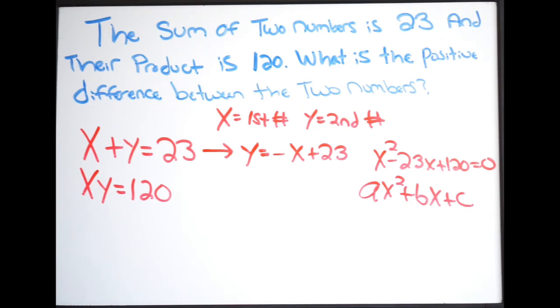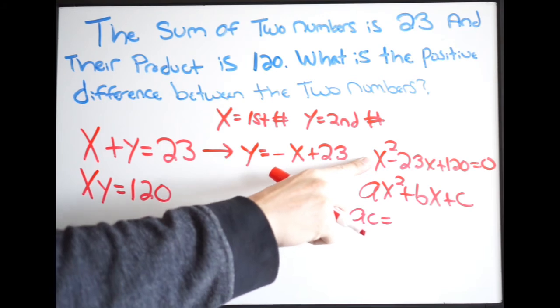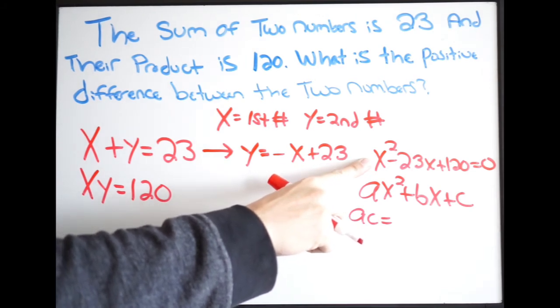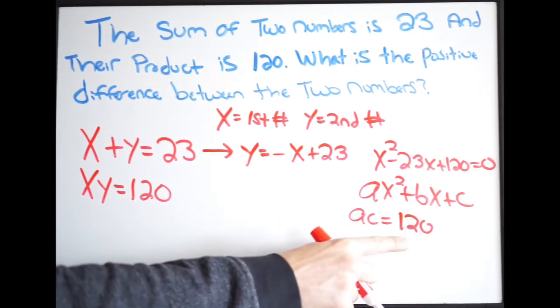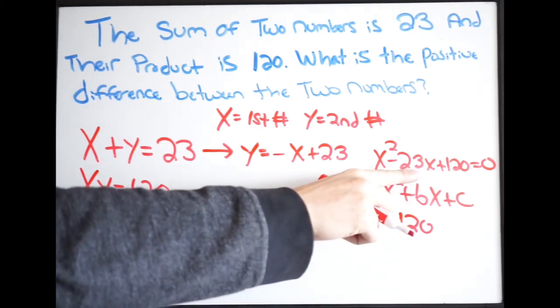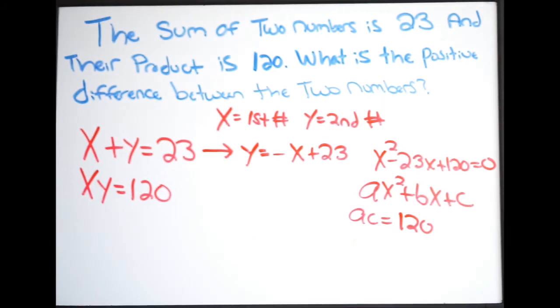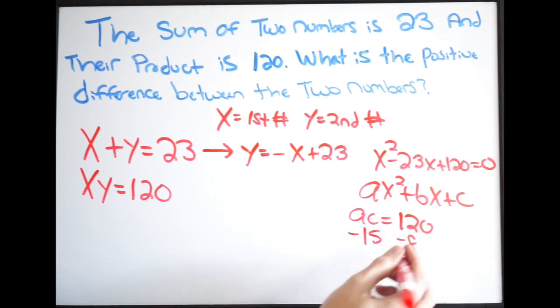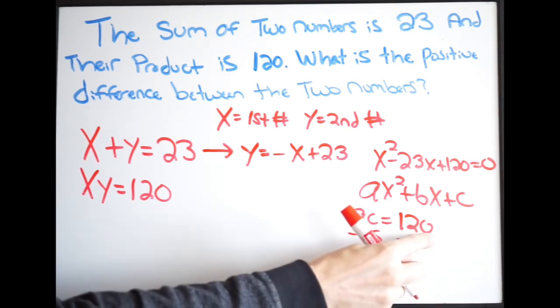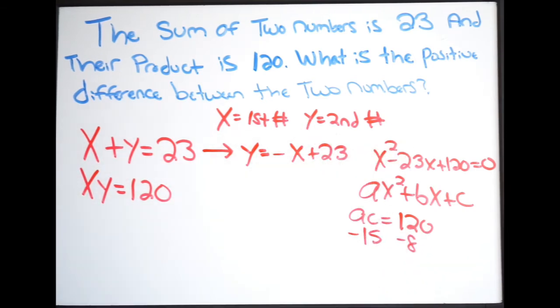And the AC method is talking about a quadratic in standard form which is ax squared plus bx plus c. So using the AC method, I do a times c. In this case, my a, my coefficient out in front is 1. My c is 120. So when I multiply the 2, I get 120. So a times c is 120. And then I have to say to myself, what two numbers when I multiply will give me 120 but add up to my b which is negative 23. That's going to be negative 15 and negative 8. When I multiply the 2, I get 120. When I add the 2, I get negative 23.